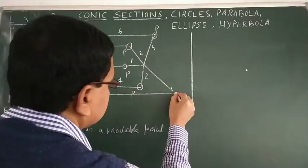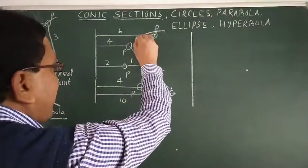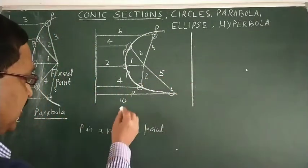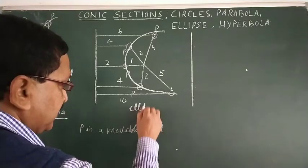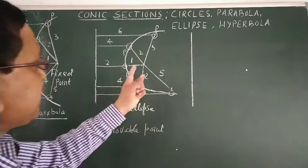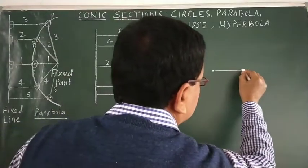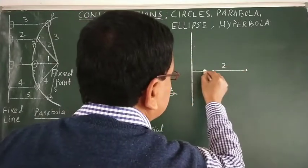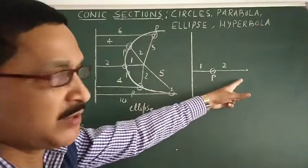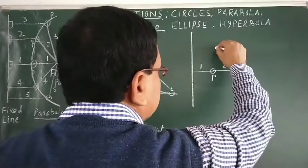This is the elliptical path — ellipse. Now the moving point P is away from the line and away from the point. This distance is two and this is one.